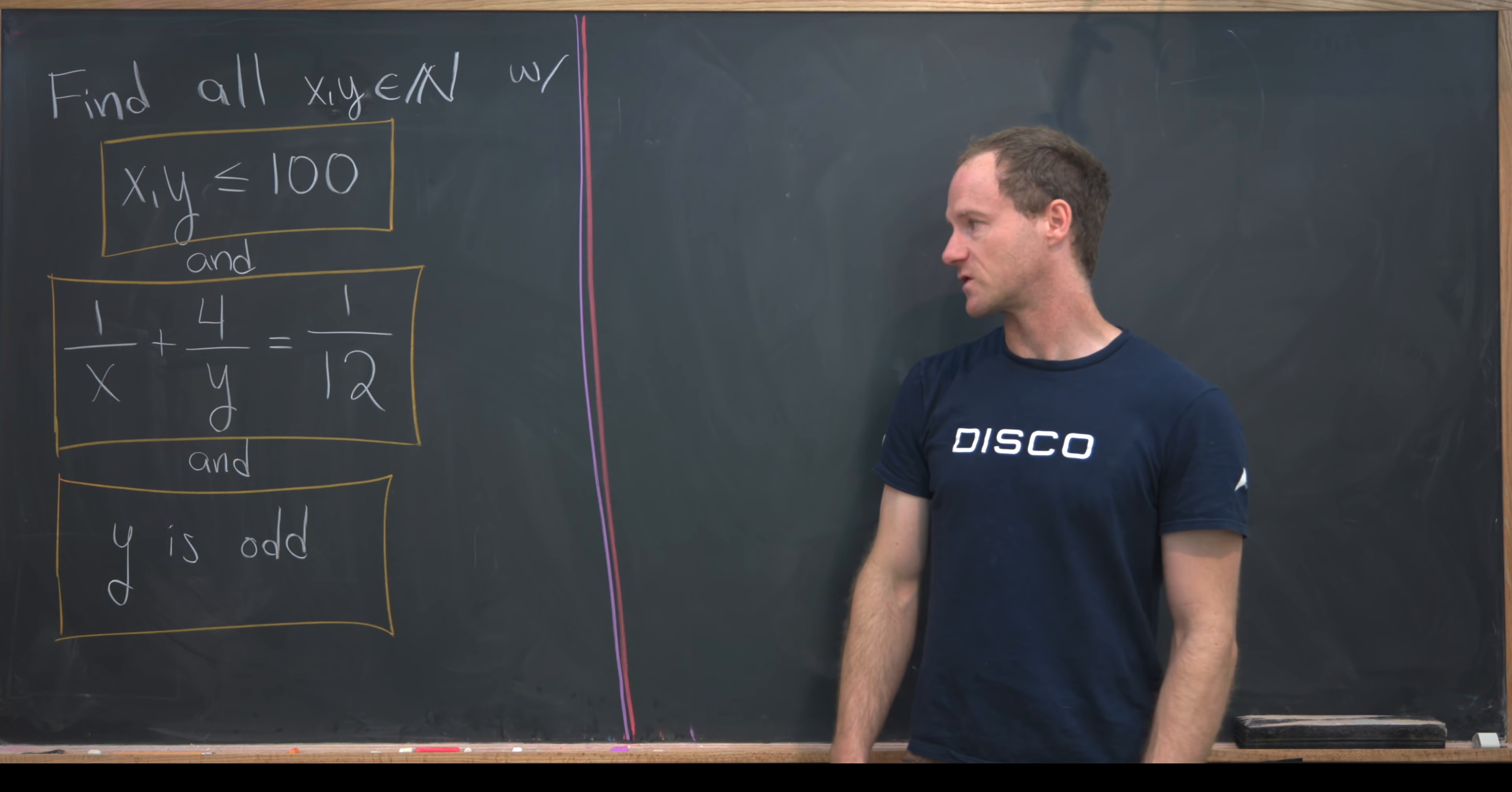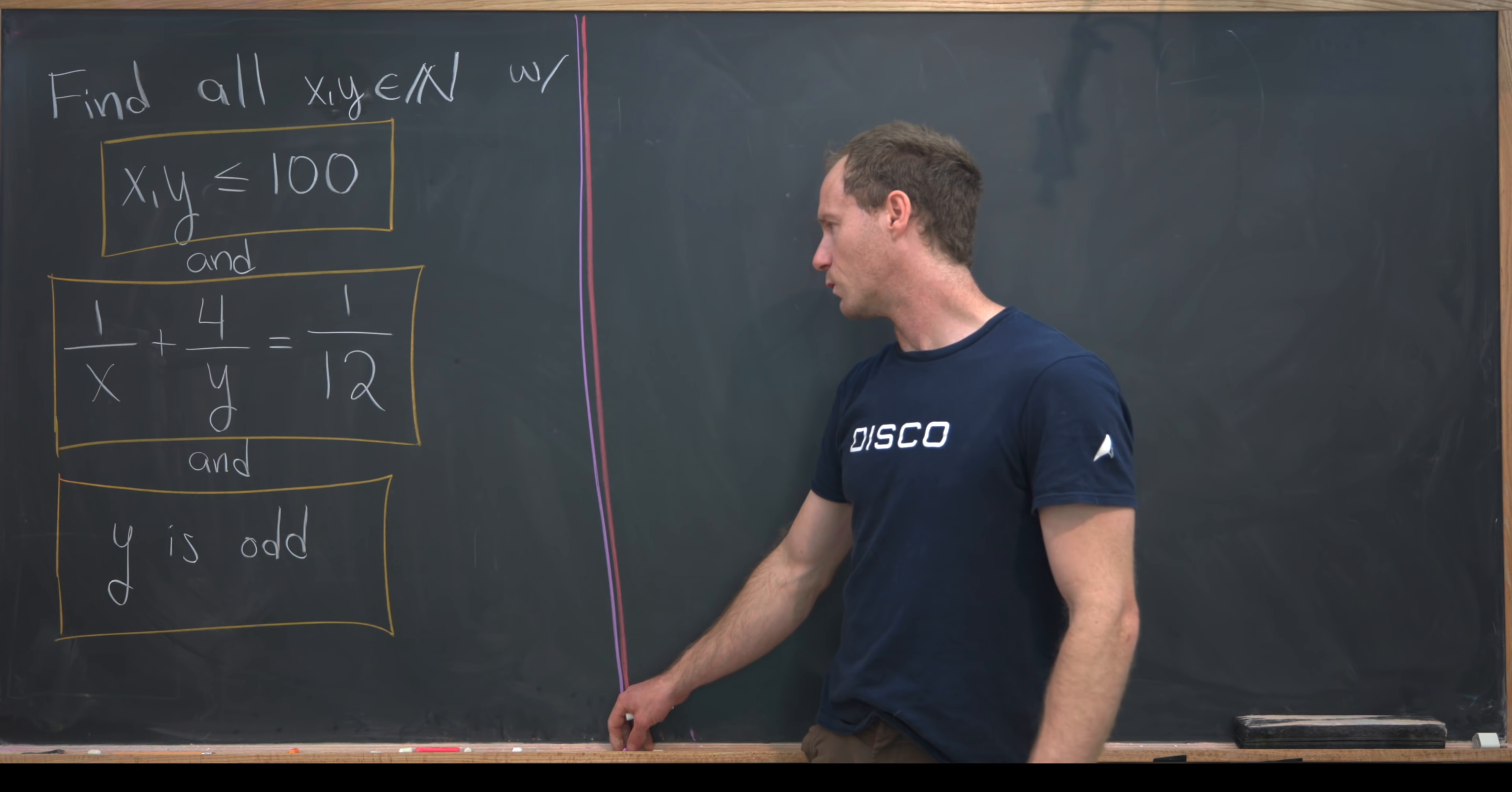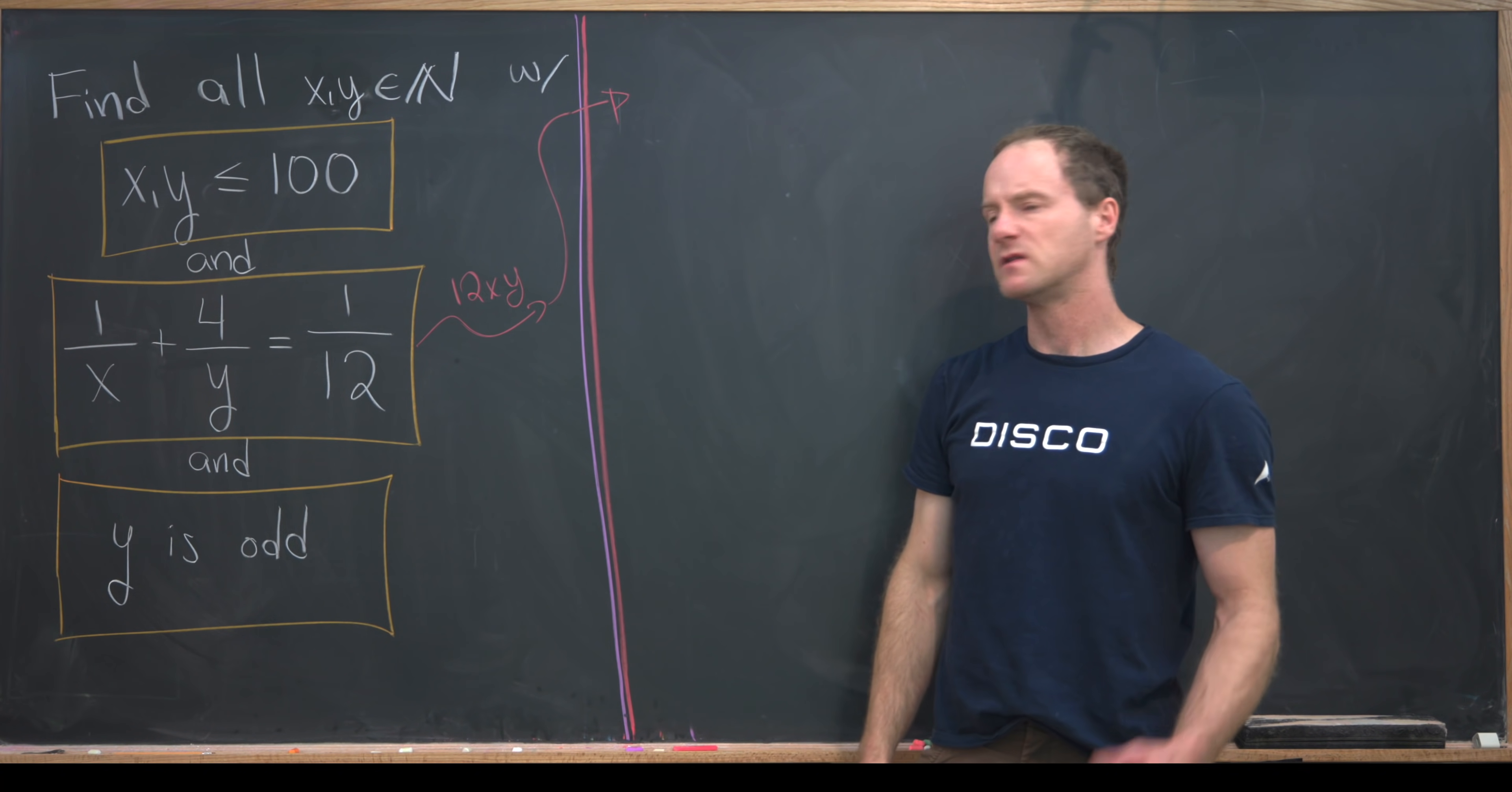Let's see what the first step would be. We'll probably take this rational expression and do something so it's more like a polynomial expression. And what would we do? Well, we'd probably take this and multiply it by 12 times x times y. That's going to have the effect of clearing the denominator because that's the product of the denominators.